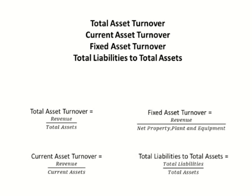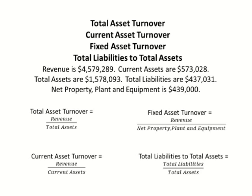To start, we'll begin with a simple list of items that you'll input into these calculations. Revenue is $4,579,289. Current assets are $573,028. Total assets are $1,578,093. Total liabilities are $437,031. And net property, plant, and equipment is $439,000.